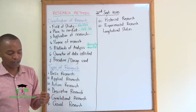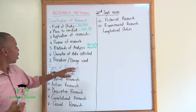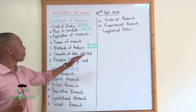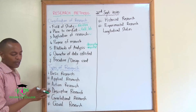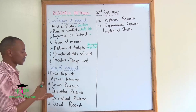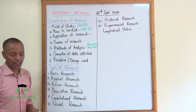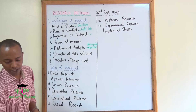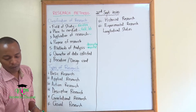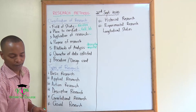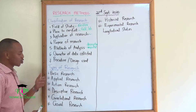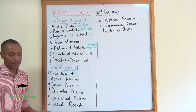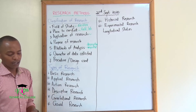Then the procedure or the design used — it could be experimental or it could be survey research. Now, on the types of research, the first one that we will talk about is basic research.